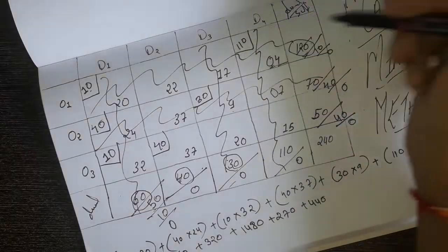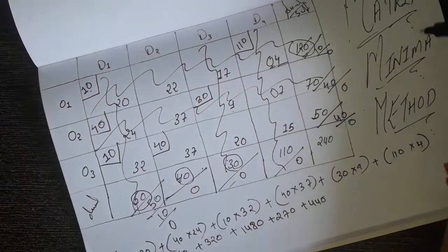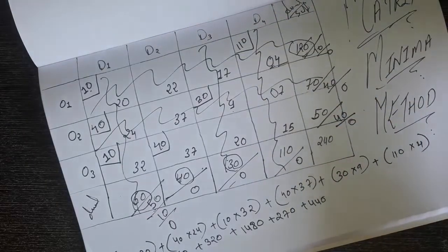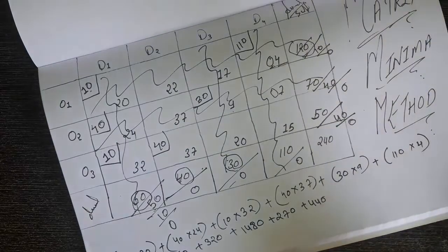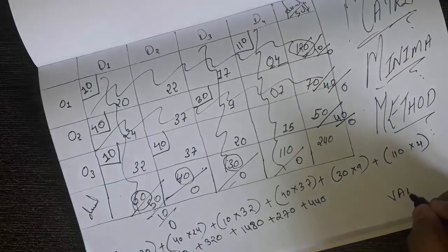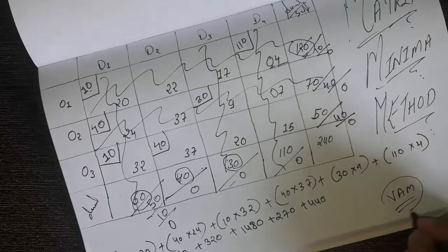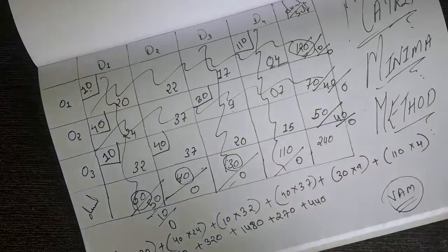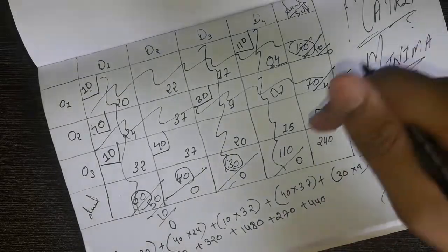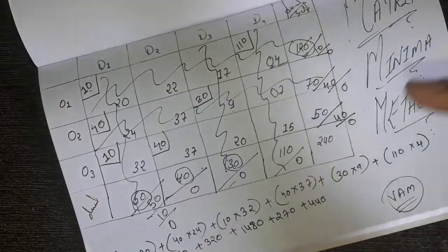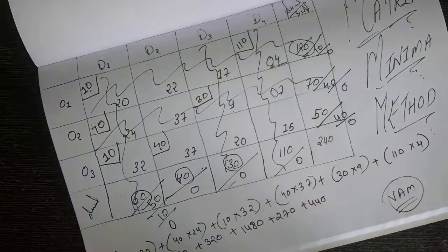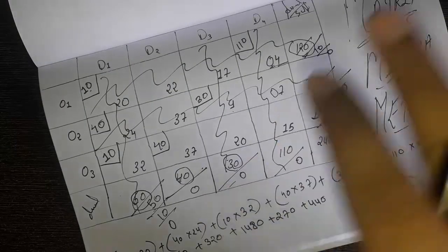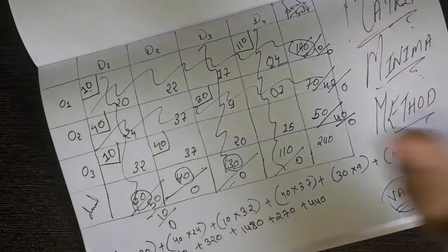This is how you solve the matrix minima method. It's one of the easiest methods — easier than the northwest corner method and the third method, which is VAM: Vogel's Approximation Method. The next video will be about VAM, so stay tuned. Hope you liked the video. If you did, press the like button, and comment below for any questions or suggestions. Subscribe for more. Bye!